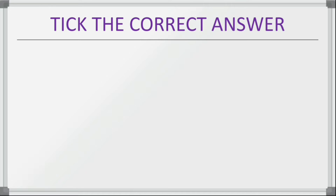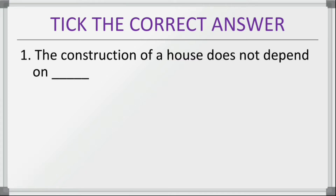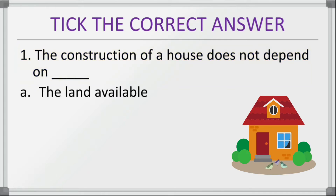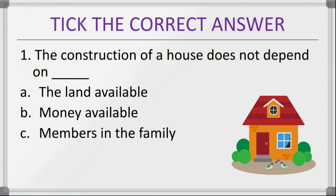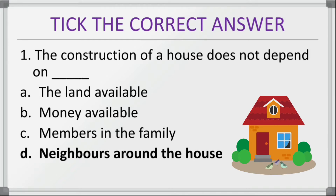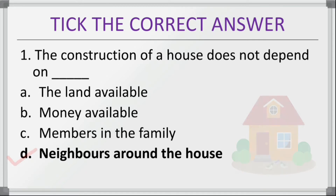Tick the correct answer. First question: the construction of a house does not depend on — options are the land available, money available, members in the family, neighbors around the house. The correct answer is neighbors around the house. So construction of a house does not depend on the neighbors around your house.